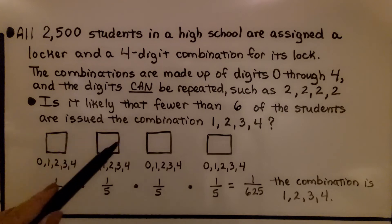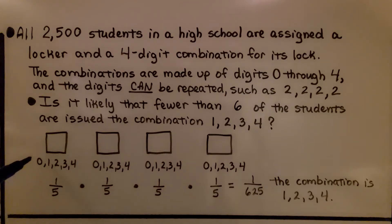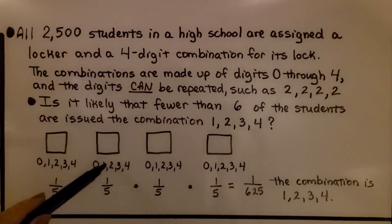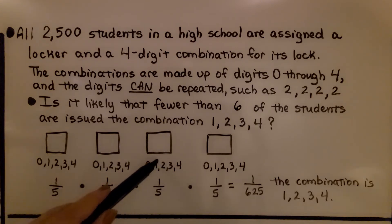So there are four digits to the combination and the first digit can be zero, one, two, three, or four. Same with the second, third, and fourth digit. It's going to be one of these five numbers, one of five. So that's one-fifth. Same with the second digit. It's one of five numbers and this is one of five numbers and this is one of five numbers.